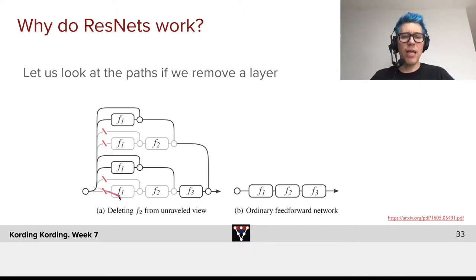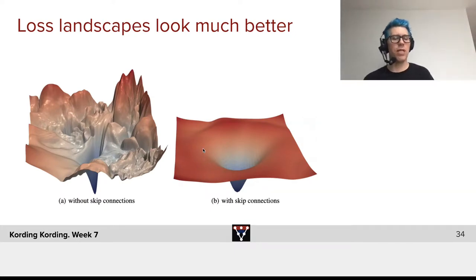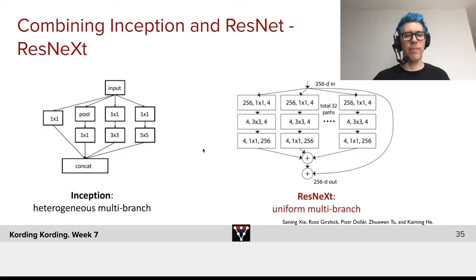Why do they work? If we look at the paths, if we remove a layer, let's say we remove layer F1, there's still two paths how we can get from the output to the input. Imagine this layer, for some reason, totally cuts out. No gradients, no forward propagation, but we can still get gradients to this path and this path, and therefore, we will have much less worry about vanishing gradients. In fact, you can model the loss landscape. Without skip connections, the loss landscape looks really bizarre, whereas with the skip connections, it has a much smoother, much more meaningful landscape where we can hope that optimization will work much better.